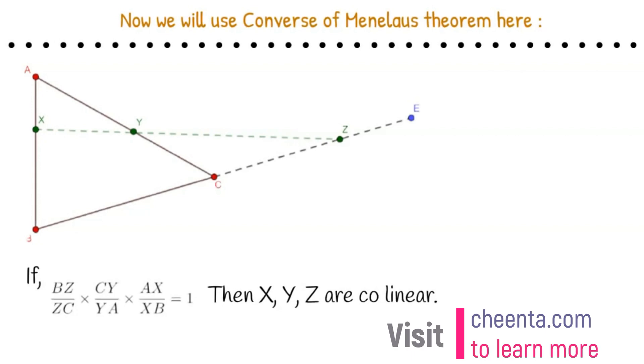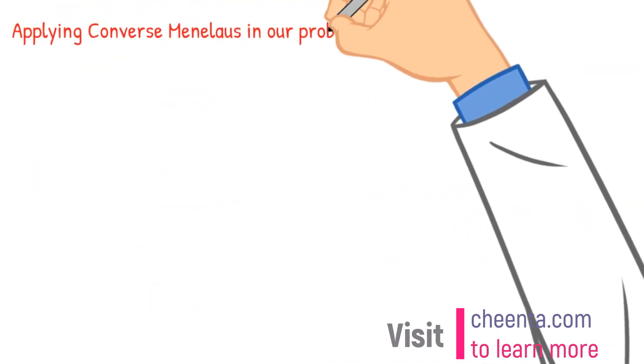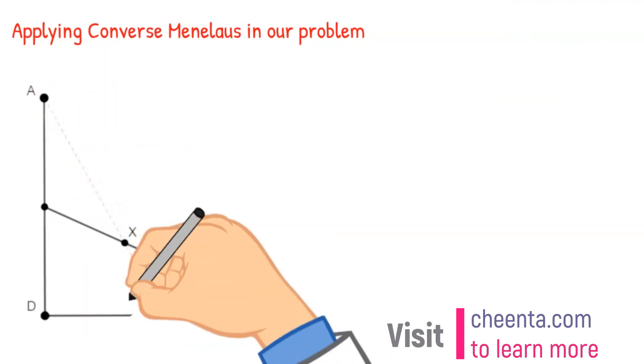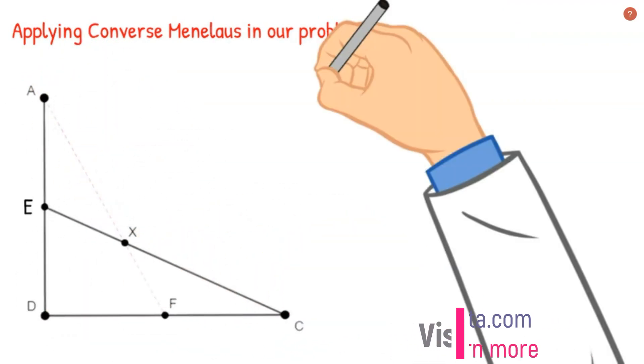We have this triangle EDC and A is a point on the extended side DE.